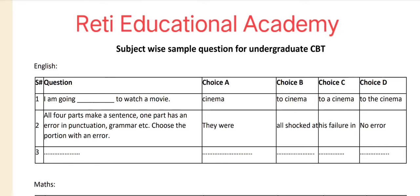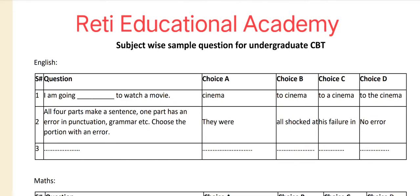Two MCQs are given in the test sample paper. Question number one: I am going ___ to watch a movie. Options: A) a cinema, B) to cinema, C) to a cinema, D) to the cinema. The correct answer is D — I am going to the cinema to watch a movie.